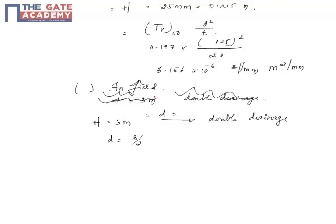If you solve for time T, TV50 into T squared divided by CV. So here T is equal to 50.